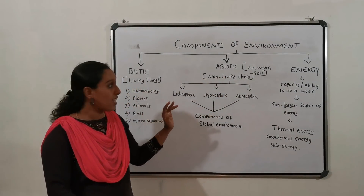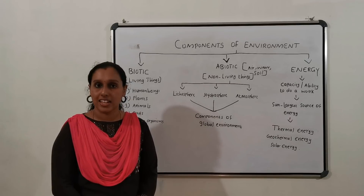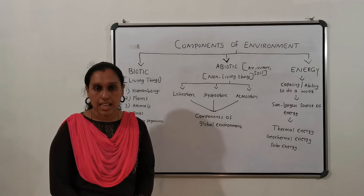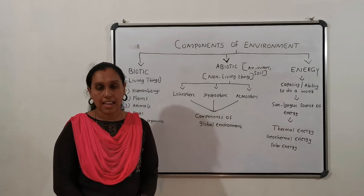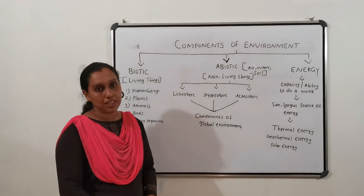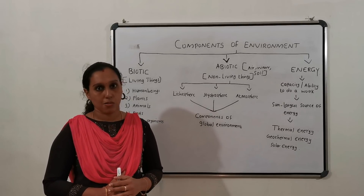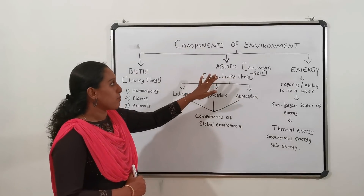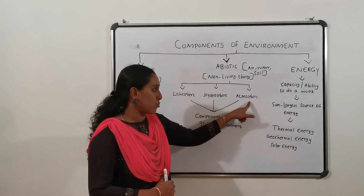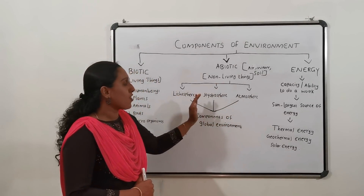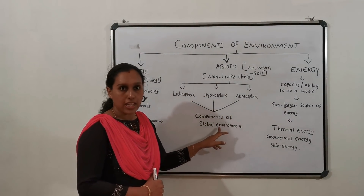Biotic means living things. What is abiotic? Abiotic means it is the one which is not alive — non-living things. Examples of abiotic elements are air, water, and soil. The abiotic environment is classified into lithosphere, hydrosphere and atmosphere. These three spheres are also known as the components of the global environment.